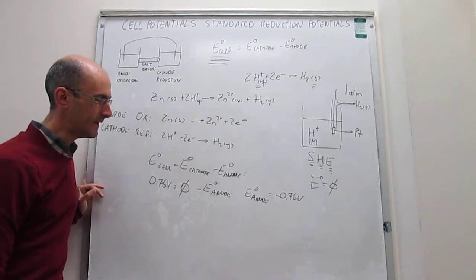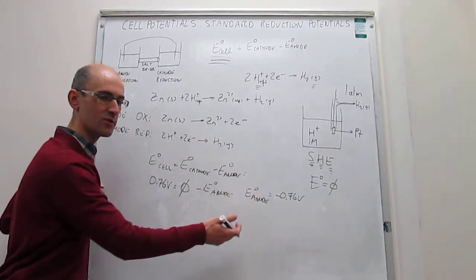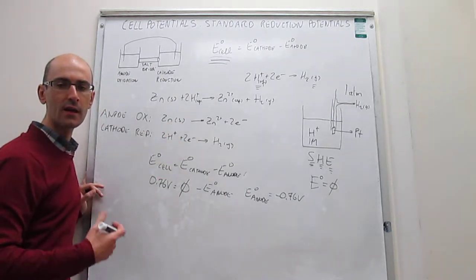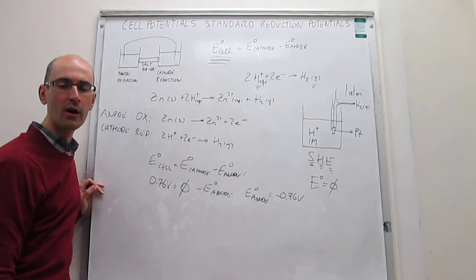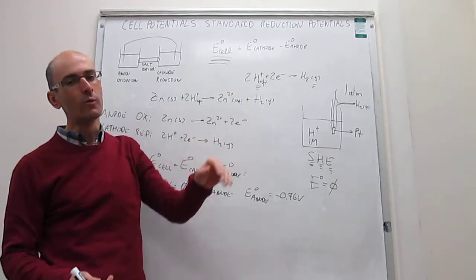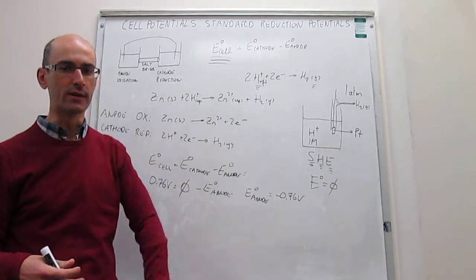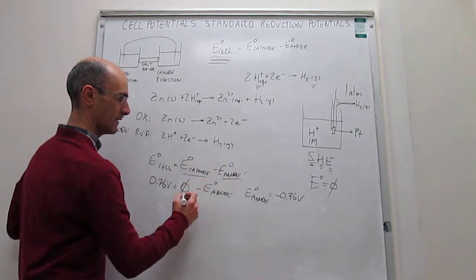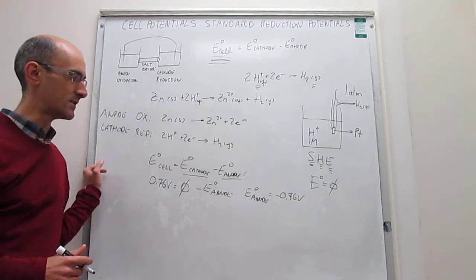Now we can build a table of standard potentials for various redox pairs. We've done this with zinc, but we could do it with copper, iron, lithium, or any system that can undergo a redox reaction. With such a table and this formula, we can calculate the cell potential for any combination of two tabulated redox pairs. Importantly, all entries in the table correspond to reduction processes.